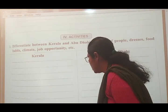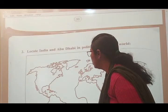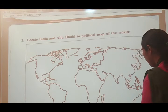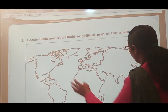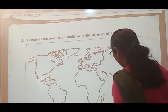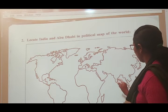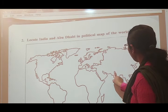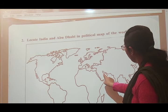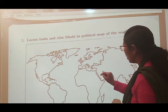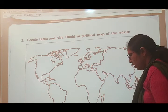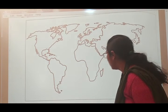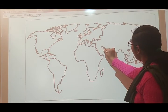Locate India and Abu Dhabi on a political map. This is the India map within the whole world map — you have to locate Abu Dhabi. Here is our India, here is Sri Lanka, and Abu Dhabi is located here. You can also take help from Google to find and locate it.